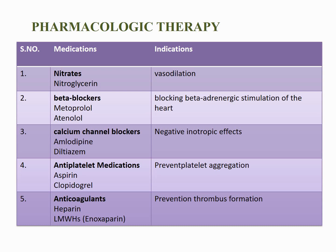The second medication is beta blockers, such as metoprolol and atenolol, which reduce oxygen consumption by blocking the beta receptors of the heart. The result is a reduction in heart rate, decreased blood pressure, and reduced myocardial conductivity to balance myocardial oxygen needs. Beta blockers also reduce the incidence of recurrent angina, infarction, and cardiac mortality.